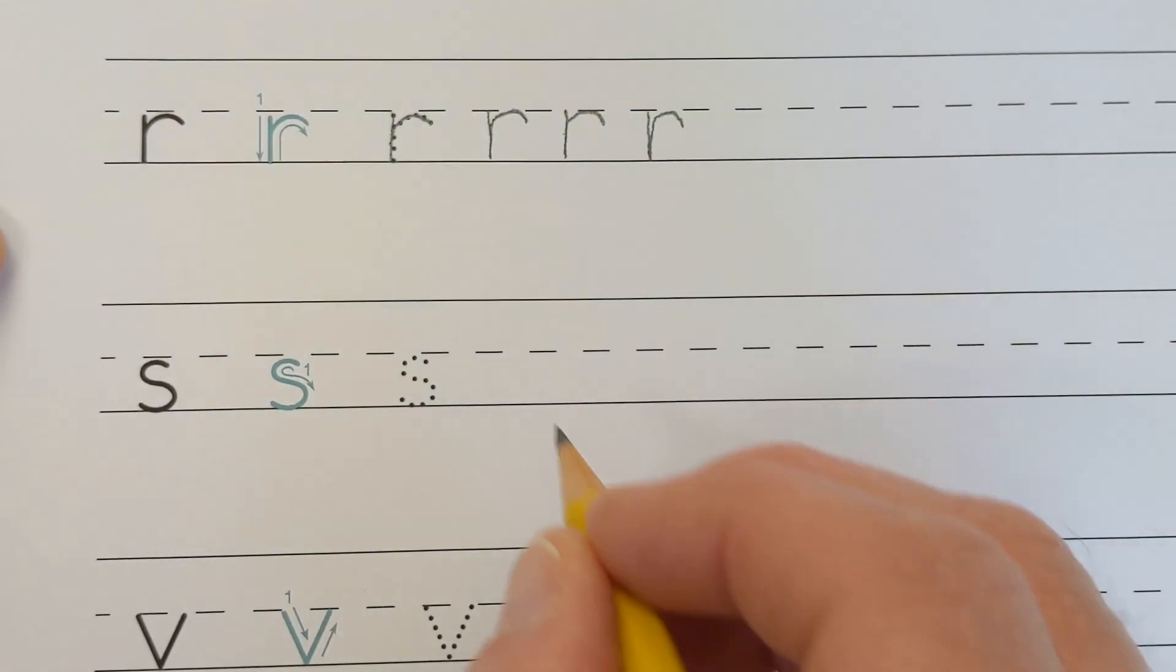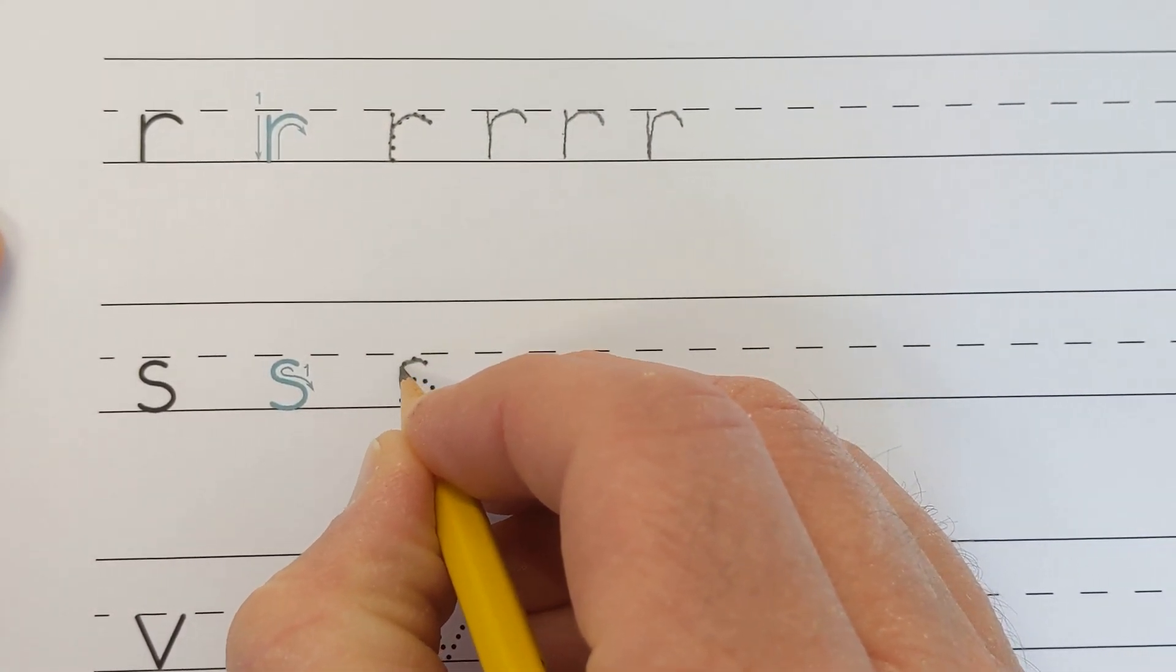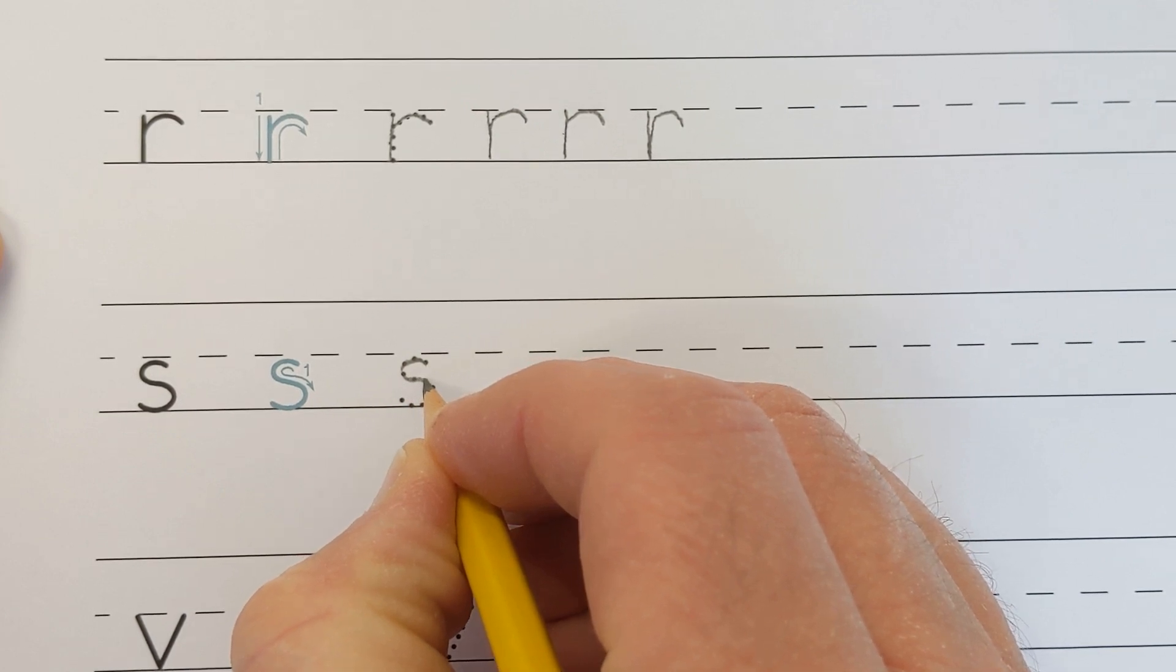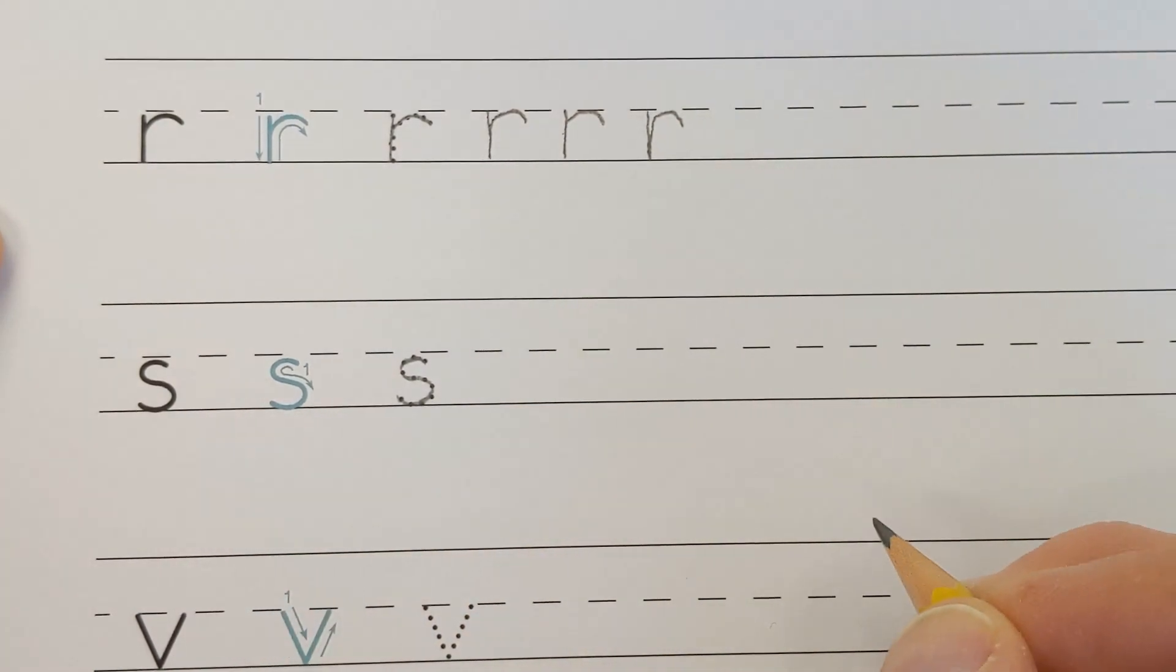Watch as I write the small letter S again. Make a half circle, moving your pencil from right to left. Continue by making another half circle, this time moving your pencil from left to right.